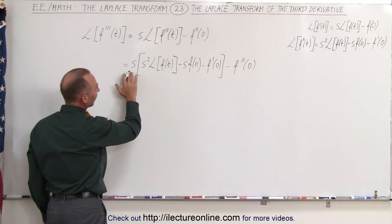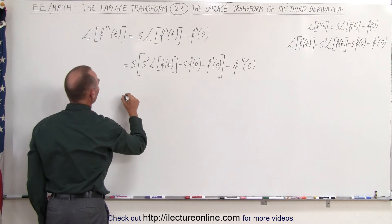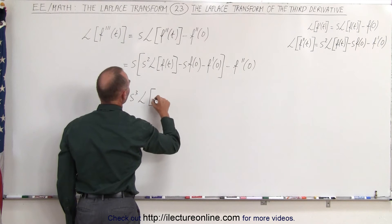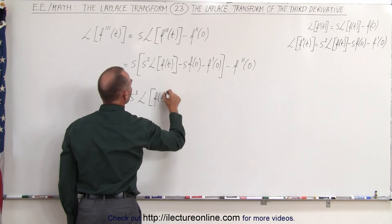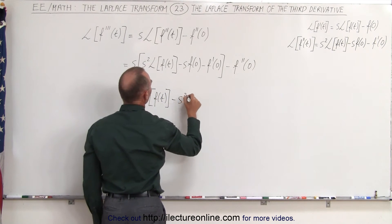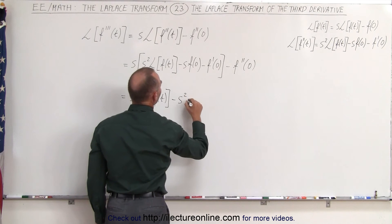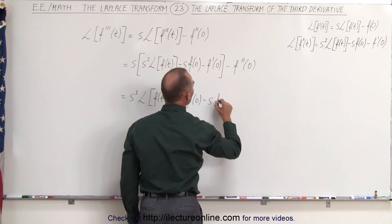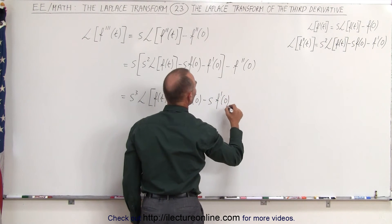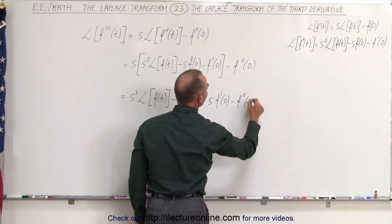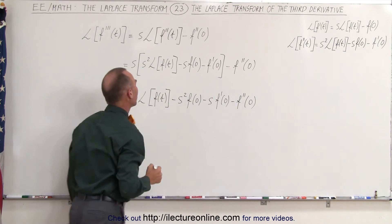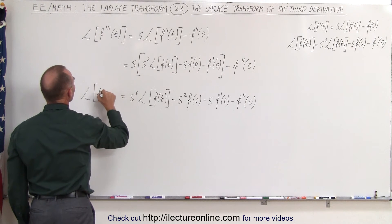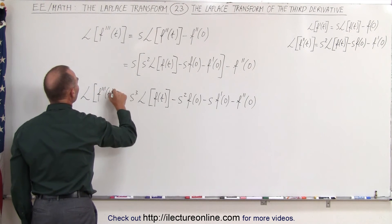Now all we have to do is multiply s into each term. This gives s cubed times the Laplace transform of f(t), minus s squared times the function evaluated at zero, minus s times the first derivative of the function evaluated at zero, minus f double prime — the second derivative evaluated at zero. And all of that equals the Laplace transform of the third derivative of the function.